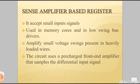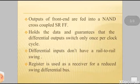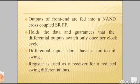It is to amplify small voltage swings present in heavily loaded wires. The circuit uses a pre-charged front-end amplifier that samples the differential input signals on the rising edge of the clock signal. The output of the front-end are fed into a NAND cross-coupled SR flip-flop that holds the data and guarantees that the differential outputs switch only once per clock cycle. The differential inputs don't have a rail-to-rail swing and this register is used as a receiver for a reduced swing differential bus.